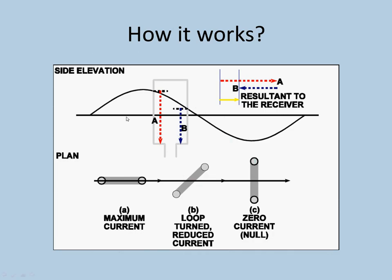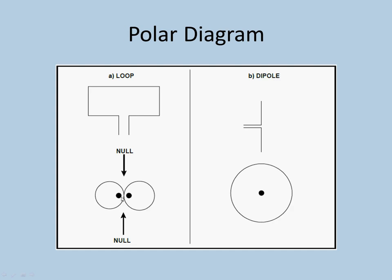How it works: this is the wave being transmitted — this is the side view and this is the plan view from the top. This is your loop. When the loop is placed in the plane of the wave, there is maximum current when it is in the same direction. The current keeps reducing as it turns and becomes zero when it is perpendicular to the wave, creating a null. When the loop is rotated again, there's another null created because of the other side. This leads to a polar diagram of the loop like a figure of eight, with two nulls.